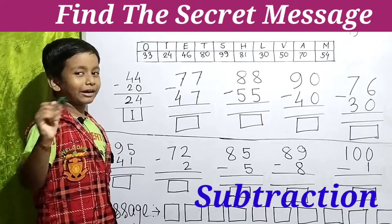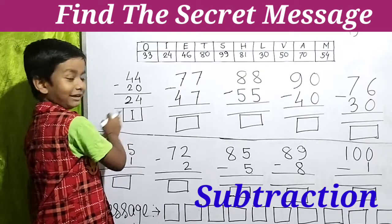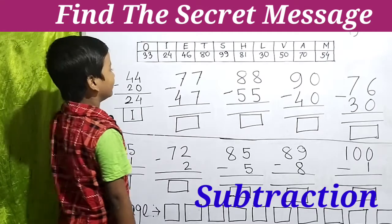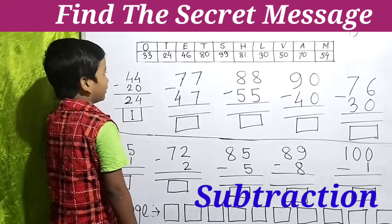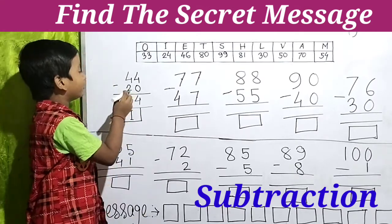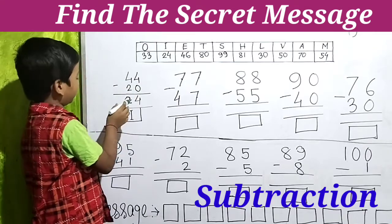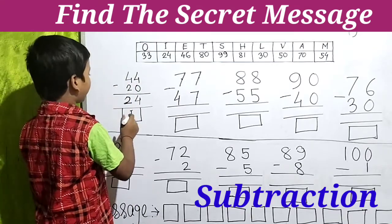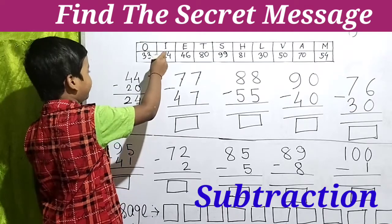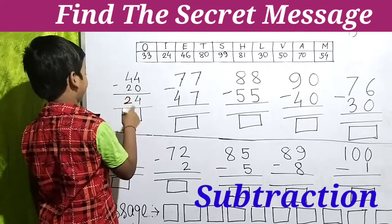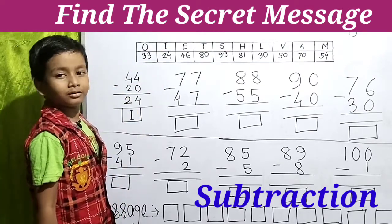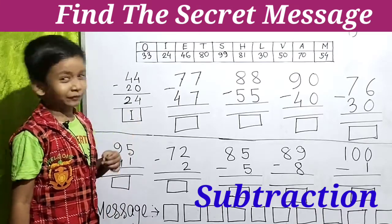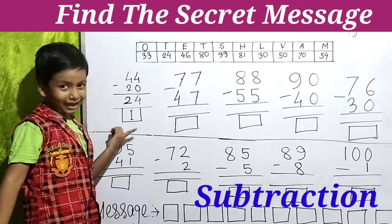I have got the marker pen to write here. Friends, we have to write 44 minus 20 equals 24. And 24 means I. There is 24 and there is I. So the first letter of the secret message is I.